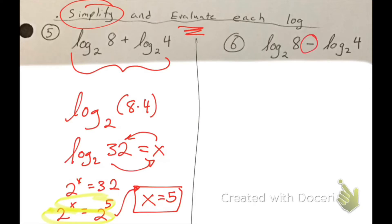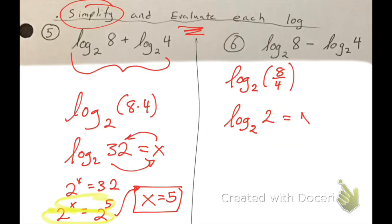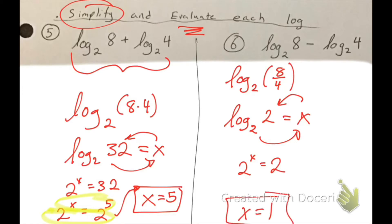Question 6: I'm subtracting, so subtraction is division. I have the same base, so I get log base 2 of 8 divided by 4, and 8 divided by 4 is obviously 2. Setting equal to x and recycling, I get 2 to the x equals 2, which means x equals 1.